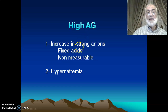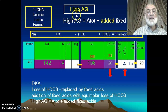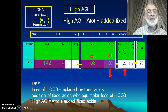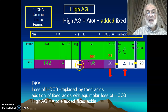High anion gap means that you are adding fixed acid — this is an increase in the strong anion gap by adding fixed acids which are non-measurable. Or in case of hypernatremia, this is also high anion gap. Usually the most common thing we face is high anion gap metabolic acidosis. The anion gap calculation: 140 plus 4, minus not 130, gives a higher difference.